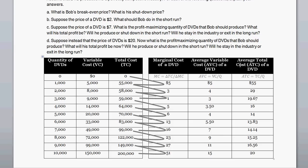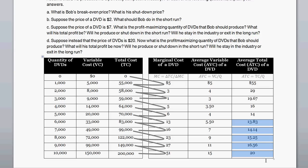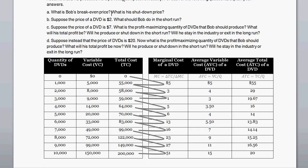The average total cost curve has a similar U-shaped curve, where early on average total cost decreases quite a bit, but after some point the diminishing returns effect takes over and average total costs start to increase. The break-even price is the price at the minimum — the lowest — average total cost. So the break-even price is $13.83, at 6,000 DVDs produced.